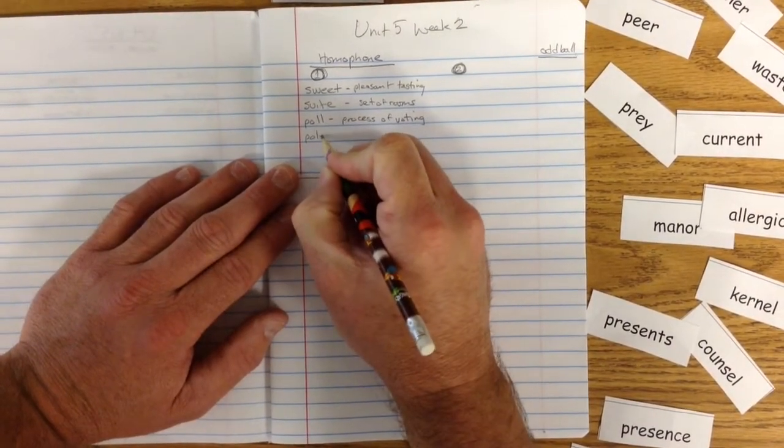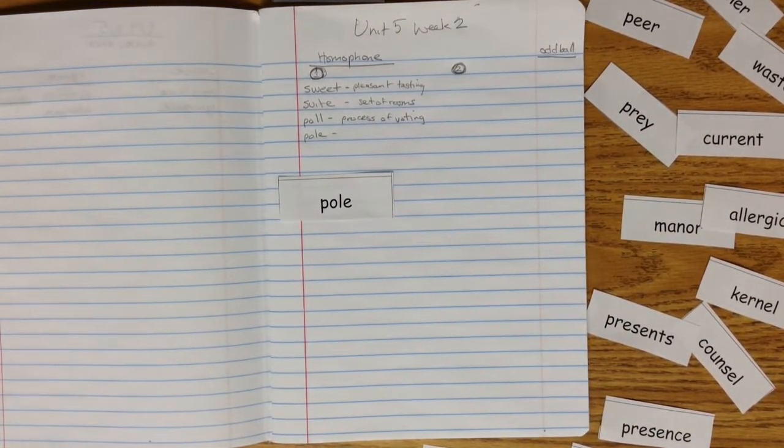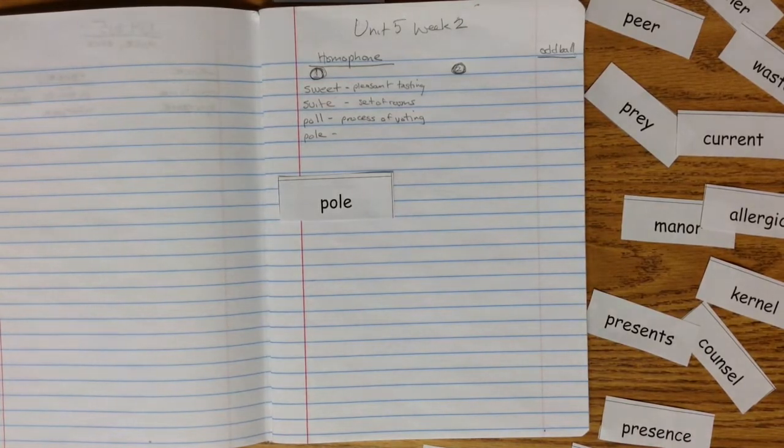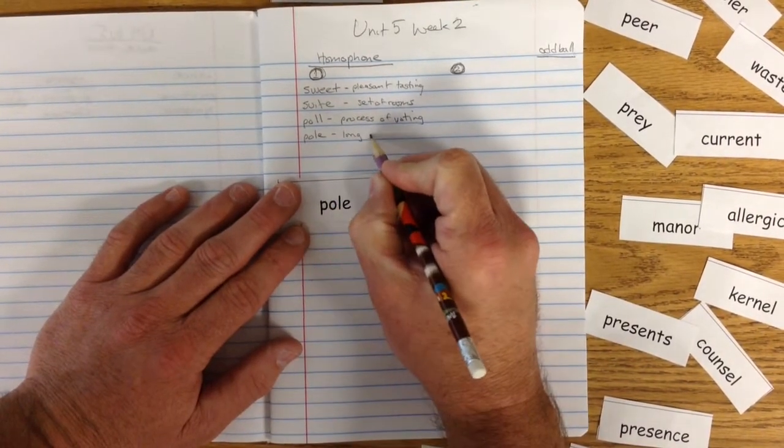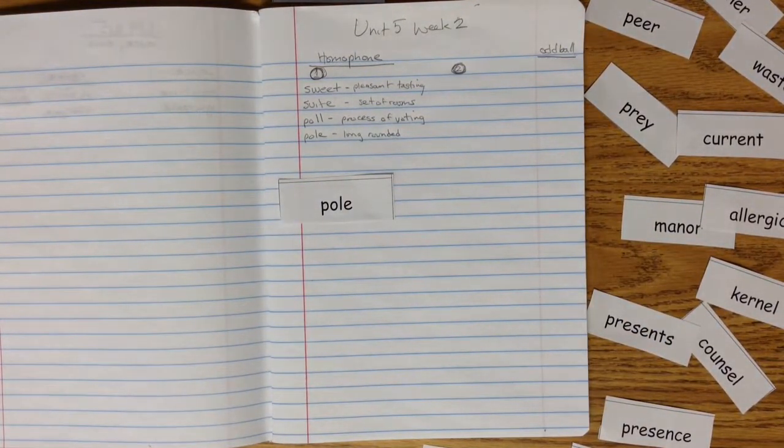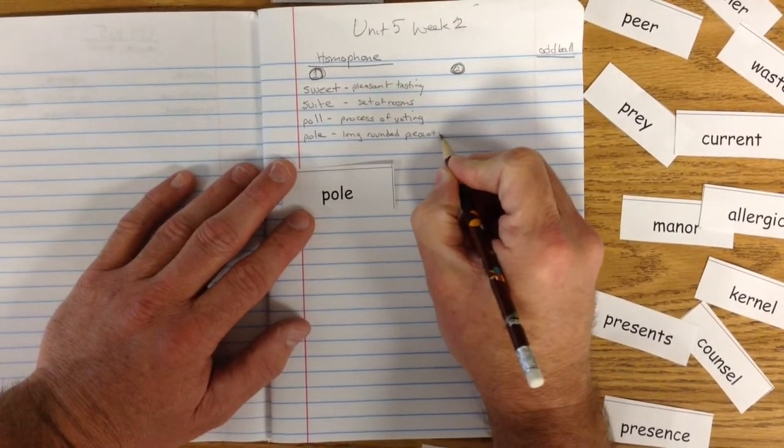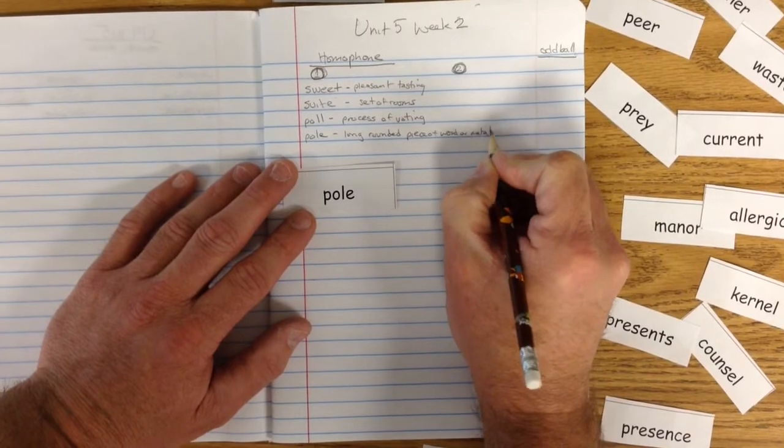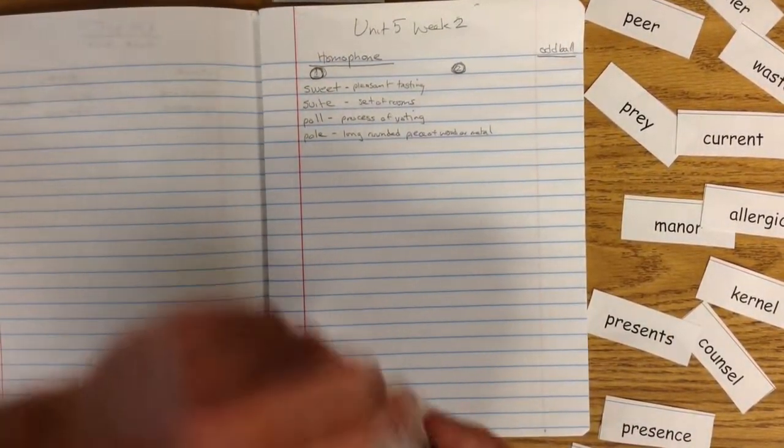P-O-L-E, pole. P-O-L-E. Now see, this one has a couple different meanings. Alright? It's a long rounded piece of wood or metal. Okay? Now, a lot of these I'm sure you can do on your own. There might be a few that you do not know.